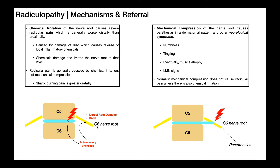If somebody has radicular pain, they're going to feel this sharp, burning, lancing pain all the way down that distribution. Will they feel it on the ulnar side of the forearm or ulnar side of the hand? No, because that area does not have a high distribution of sensory components with any contribution from C6 — that's going to be more C8. So that goes into the dermatomal patterns, which we'll get into in the next video.